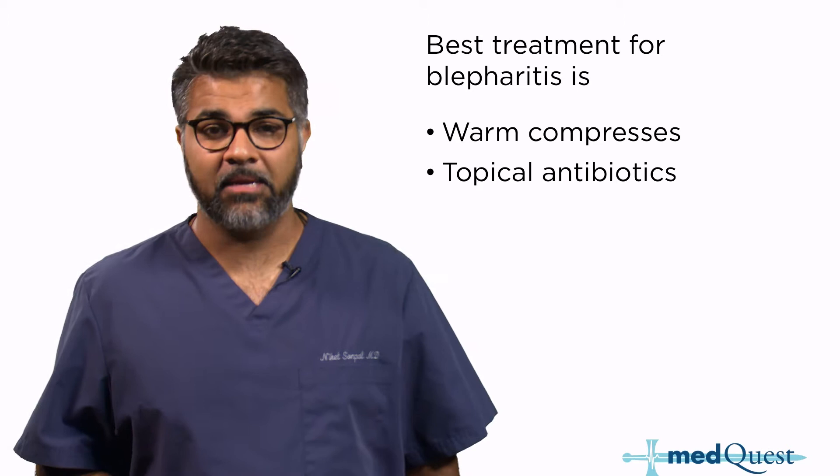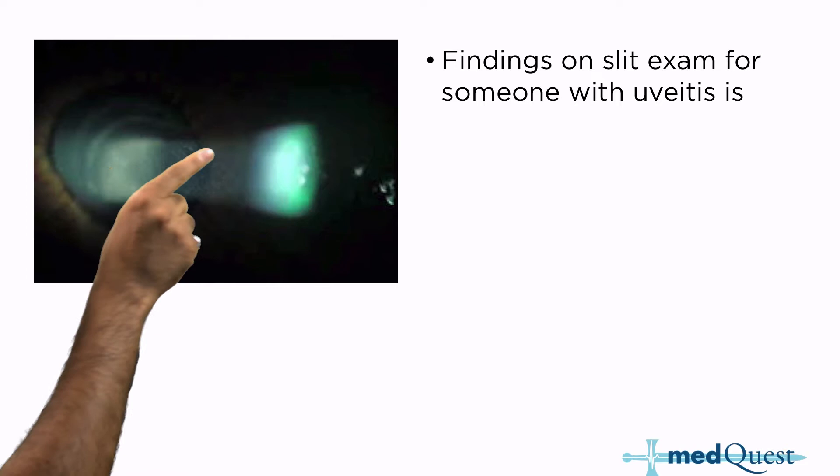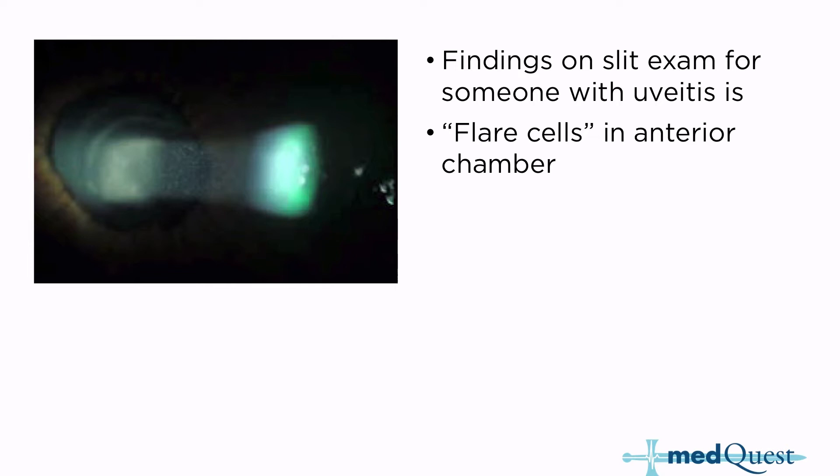Here we have another image — this is what the actual ophthalmologist will show you. A lot of these are slit lamp exams or retinal exams, and that's what the ABIM will give you. They will show you these images and you have to know them. You might be thinking, during residency you don't even know what an ophthalmoscope looks like — that's why you're taking MedQuest. What you're seeing here is a slit lamp exam for someone with uveitis. You'll notice a hazy, dusty quality — it almost looks like snow in the anterior chamber. Those are called flare cells. The finding you need to know for uveitis is flare cells in the anterior chamber.